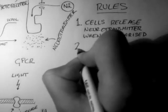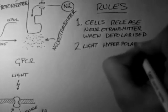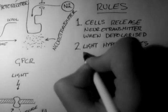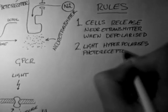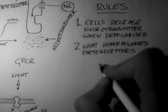So I want to introduce my second rule. This is that light hyperpolarizes photoreceptors. And when looking at these visual systems, it can get really confusing. So it's really important to remember these two rules. And then you can kind of work things out from these principles.